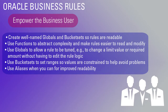We want to empower the business user. Globals are like variables. Bucket sets are sets of values — for example, days of the week, or customer status values like platinum, gold, and silver. You can also have a set of ranges, such as 0 to 10,000 and 10,000 to 20,000, where you can apply different conditions to those ranges.